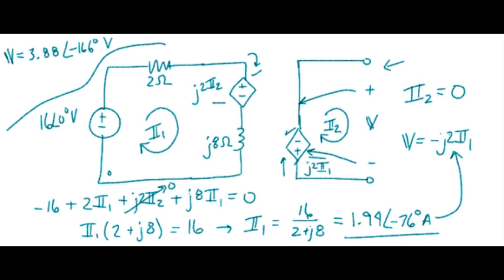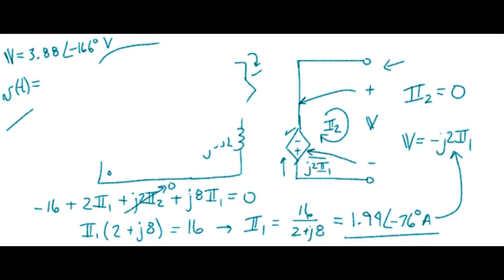And we were looking for a time domain representation. So that's the same thing as v(t) equals 3.88 cosine of 4t minus 166 degrees volts.